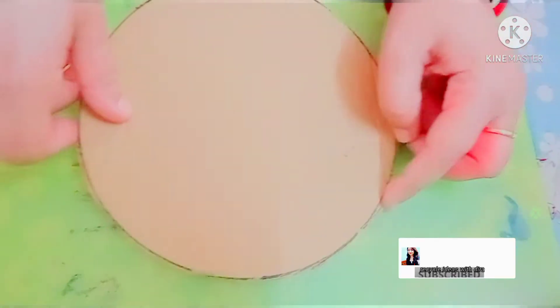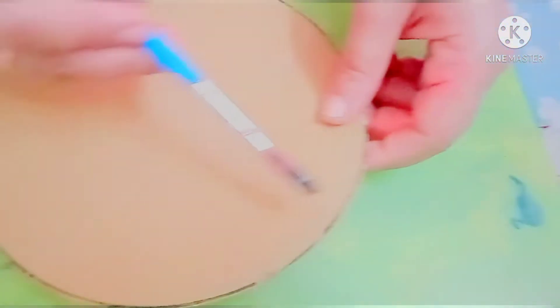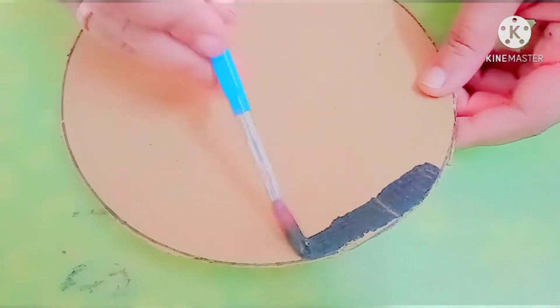For this DIY you need cardboard. Cut the cardboard in a round shape and you need black acrylic paint, or if you have watercolor, simple watercolor like this, you can use it. You have to paint it all over.